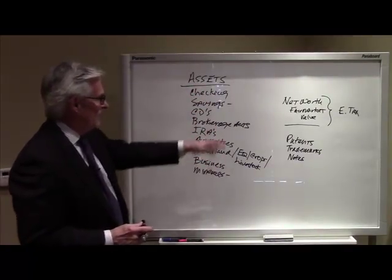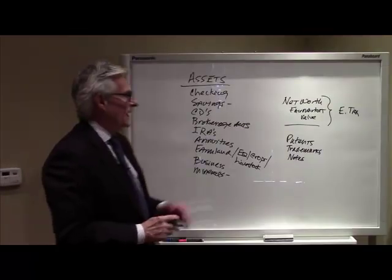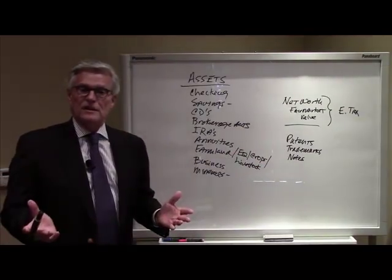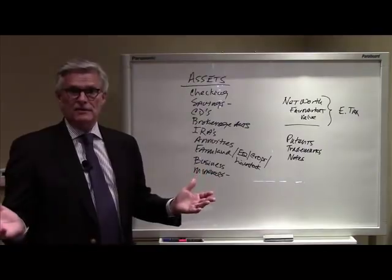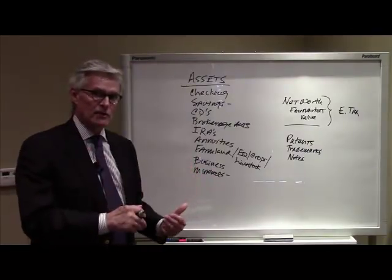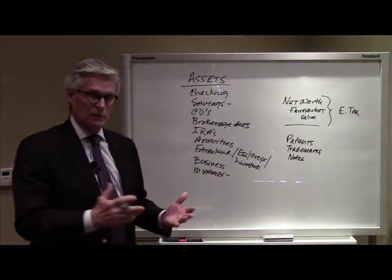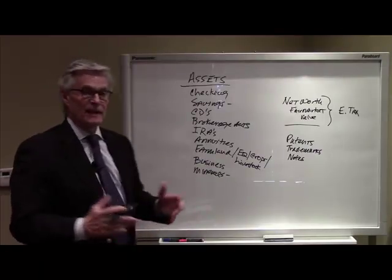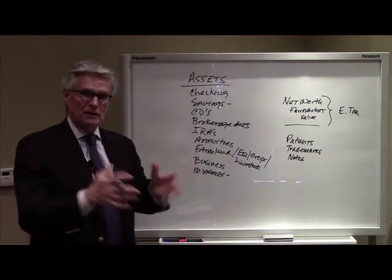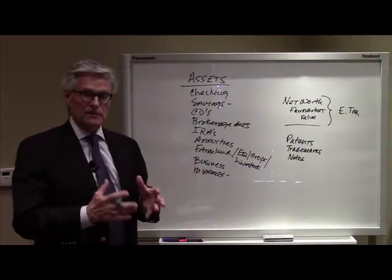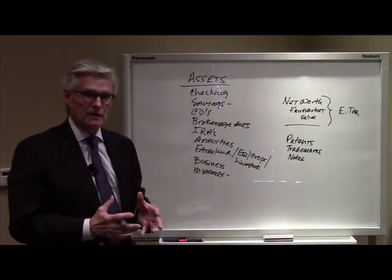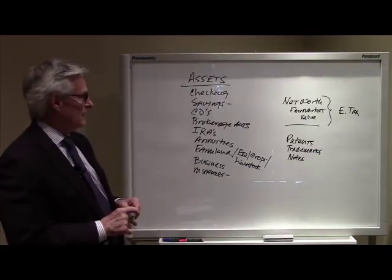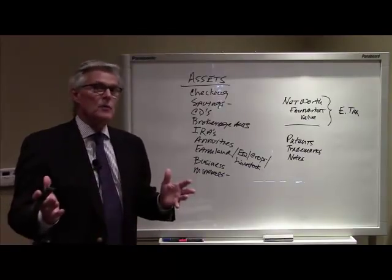We go through and we tally all that up and we come to a number. If that number exceeds the current estate tax exemption, then we may have an estate tax problem. If we're under that exemption amount, then we should not have an estate tax problem. And if we're a couple, we can combine — we can create two exemptions if we plan correctly. You want to be sure not to inadvertently lose one, but we'll talk about that in another session.